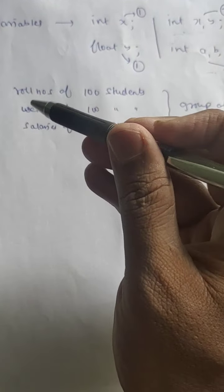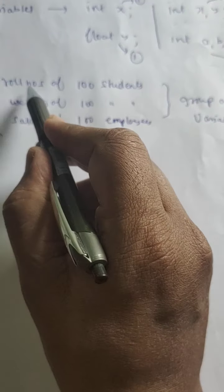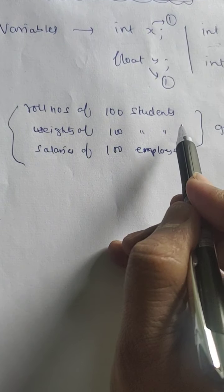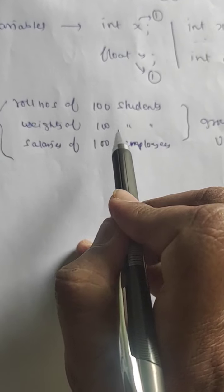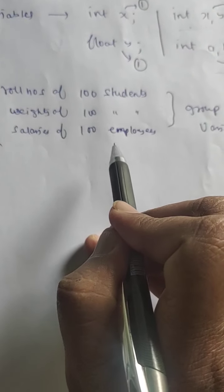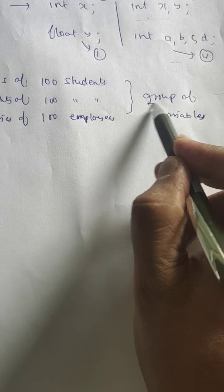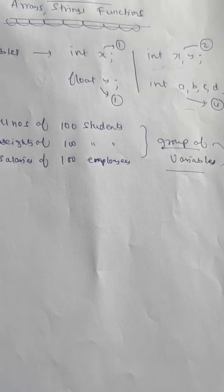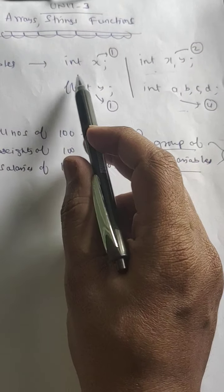But when there is a requirement like this: roll numbers of 100 students to be recorded, weights of students in a class of 100, salaries of 100 employees - a group of variables you want to use in the program.